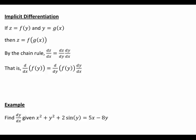But how do we go about this? Well, it's first worth noting that if z is a function of y, and in turn y is a function of x, then obviously z is of the form f(g(x)). And by the chain rule, the derivative of z with respect to x is then the derivative of z with respect to y, multiplied by the derivative of y with respect to x.